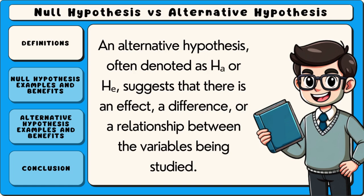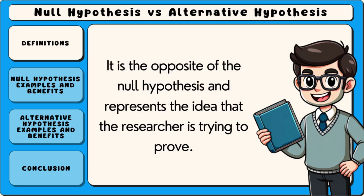An alternative hypothesis, often denoted as HA or HE, suggests that there is an effect, a difference, or a relationship between the variables being studied. It is the opposite of the null hypothesis and represents the idea that the researcher is trying to prove.